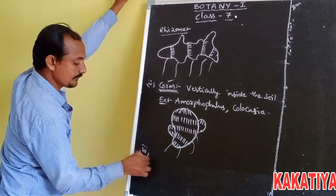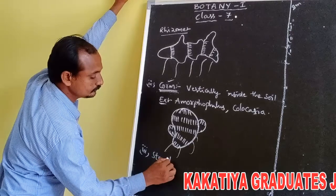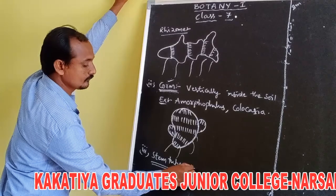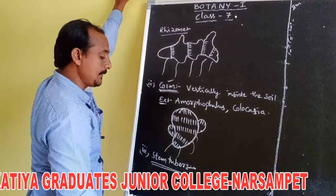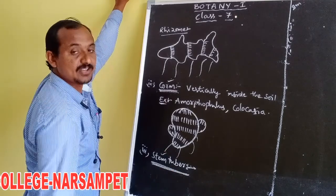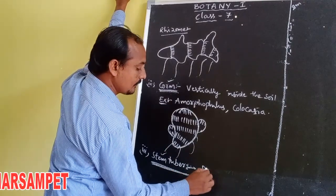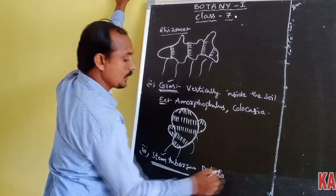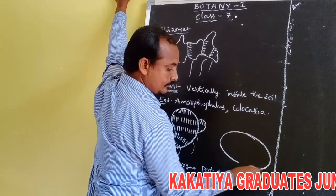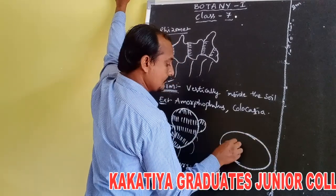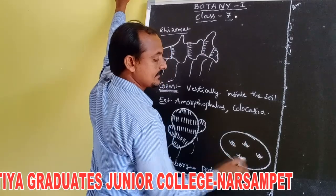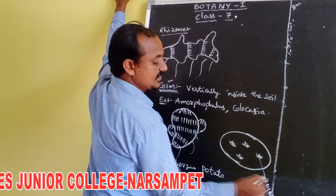Third is stem tuber. The terminal part of the stem that stores food material and becomes tuberous — these are called stem tubers. For example, potato (Solanum tuberosum). It also consists of eyes, which generally involve in vegetative reproduction.